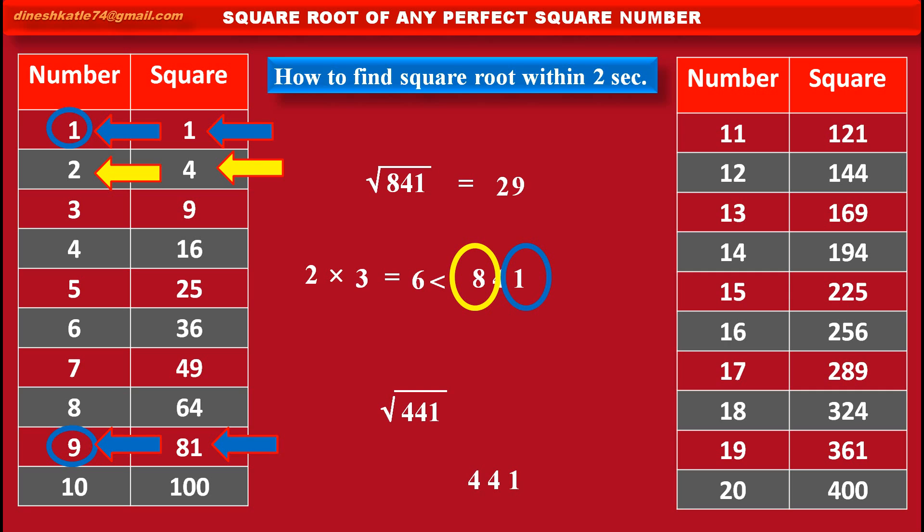If, at the place of 841, the given number will be 441, then in this case the first digit number is 4, so the square number below or equal to this 4 is again same 4, so square root of 4 is 2. That's why the first digit number of the answer is again same 2.